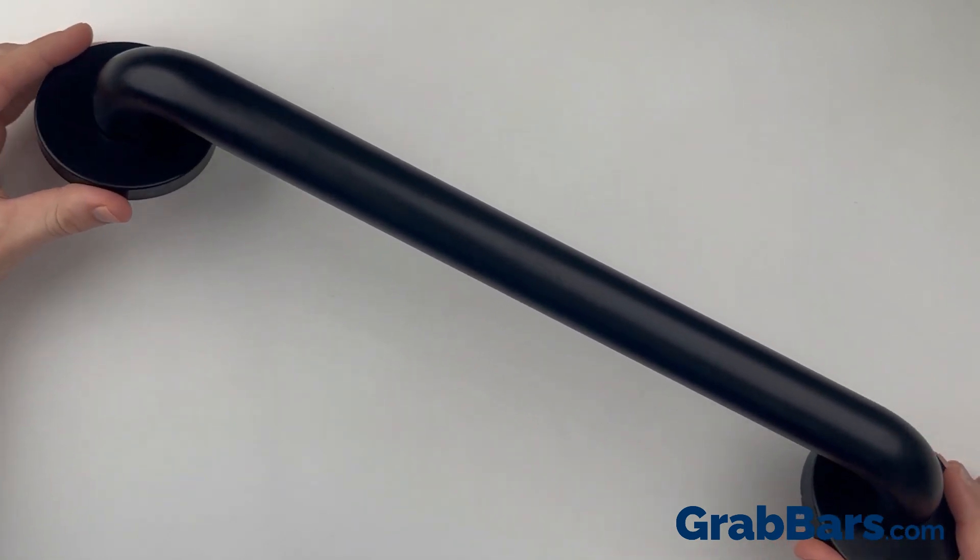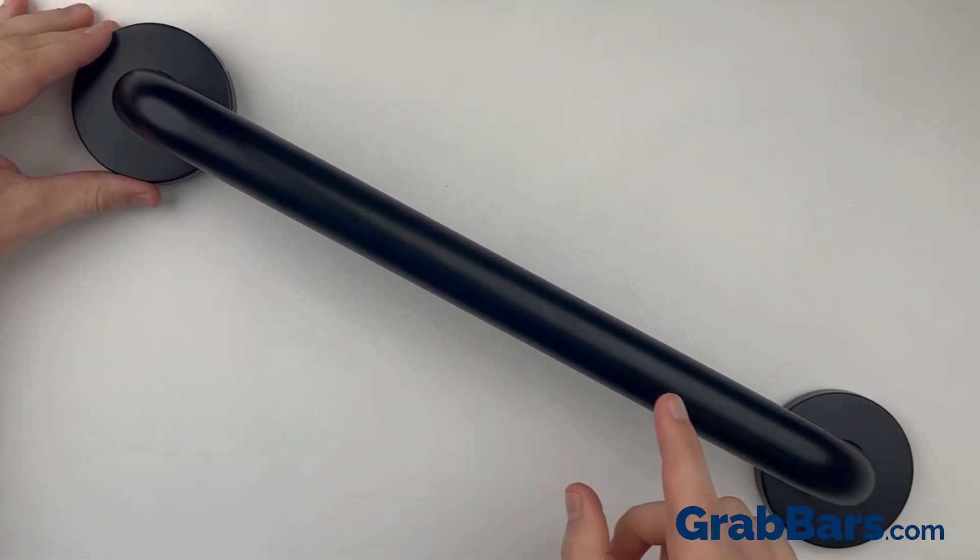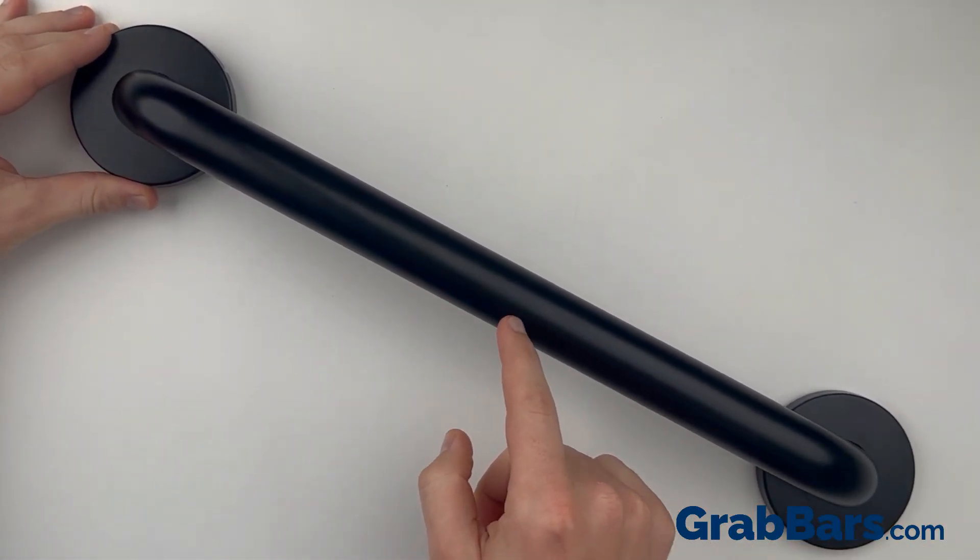The matte black finish has a non-reflective, smooth, and chalky surface. The finish is less likely to show dirt and fingerprints as compared to other finishes.